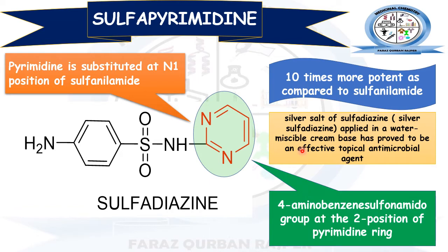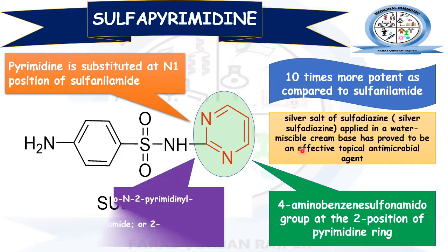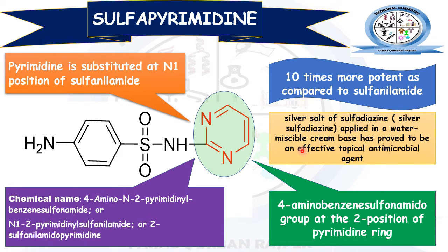Beside this, there is a 4-aminobenzene sulfonamide group at position 2 of the pyrimidine ring. The IUPAC name for Sulfapyrimidine is 4-amino-N2-pyrimidine-benzene sulfonamide. It can also be named as N1-pyrimidine-sulfanilamide, indicating that the N1 position of sulfanilamide is being substituted with pyrimidine. It can also be simply named as 2-sulfanilamidopyrimidine, meaning the second position of the pyrimidine ring is being substituted with sulfanilamide.